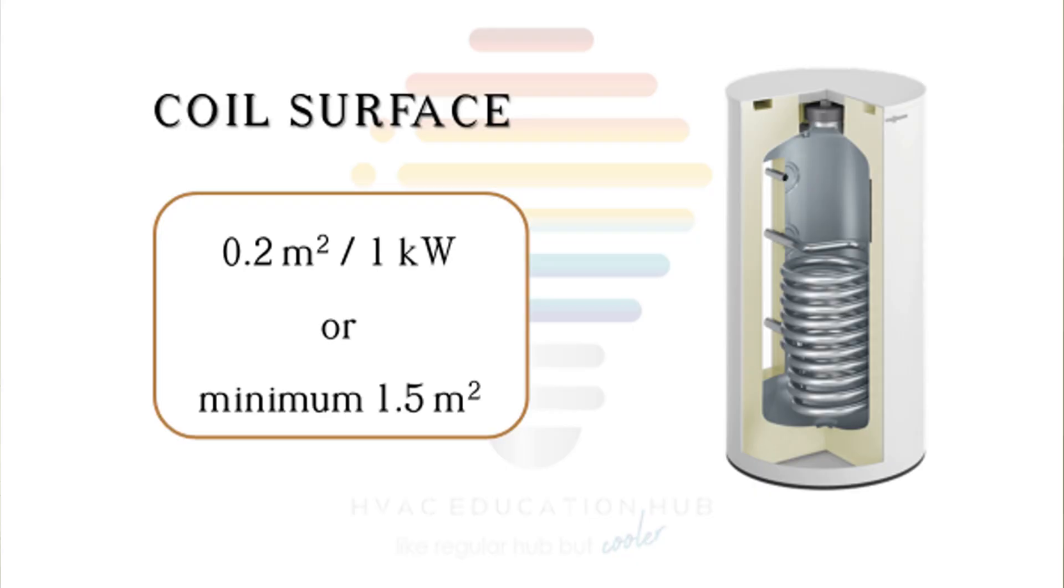First thing to remember is that in order to have quality domestic hot water tank heating with heat pumps, you need to have big coil surface of tank. For example, 0.2 square meter per 1 kilowatt, or for small models, minimum 1.5 square meters of coil surface.